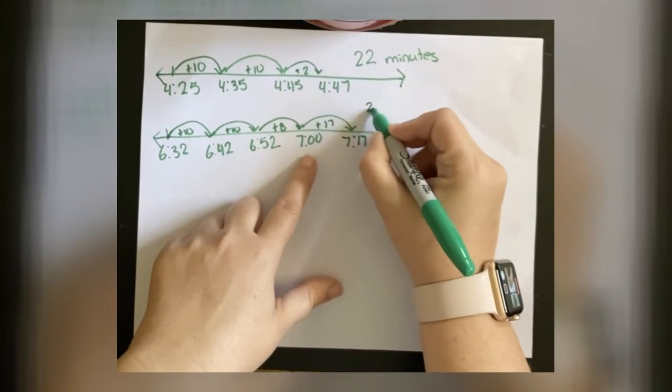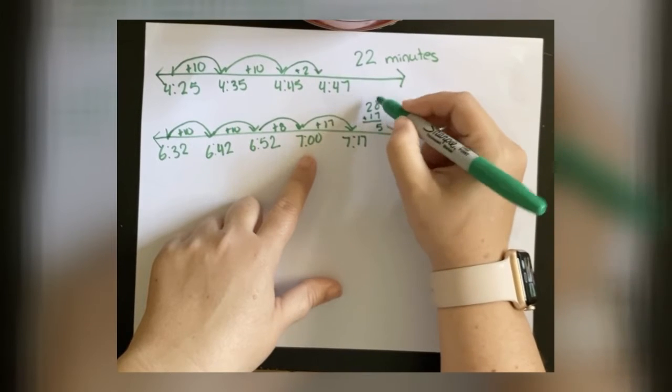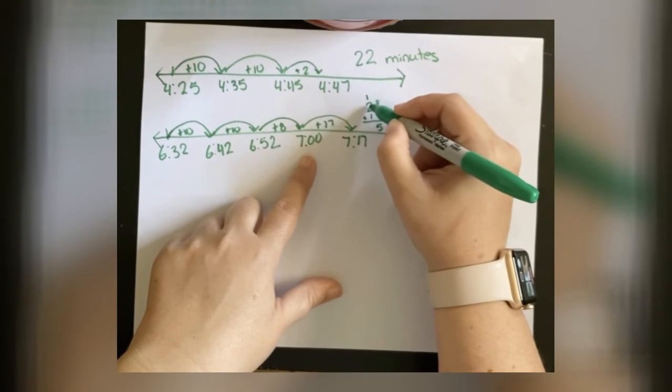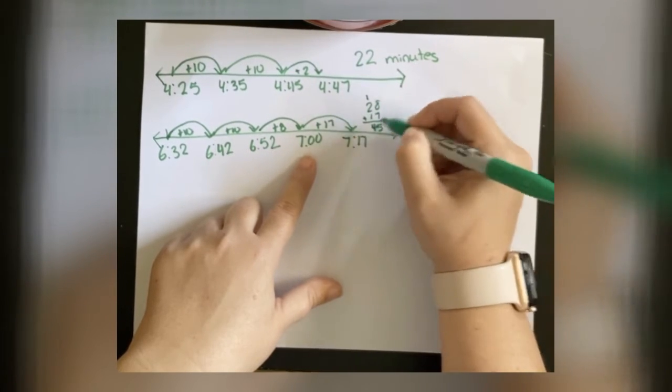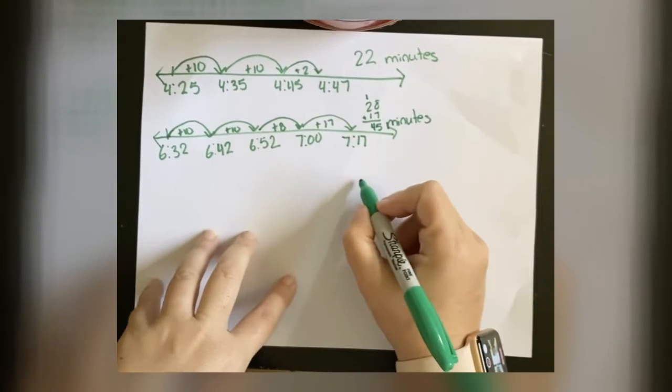28 plus 17, I will do that here. So 8 plus 7 is 15, 1 plus 2 is 3, and one more is 4. So for this part, I read for 45 minutes.